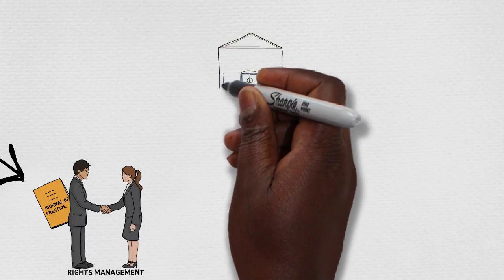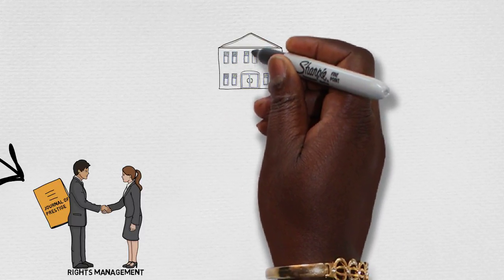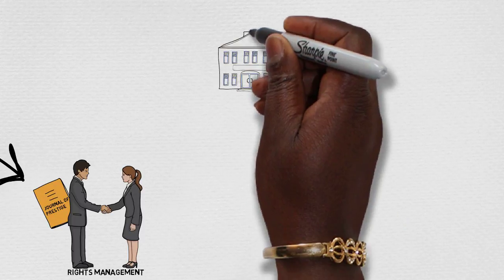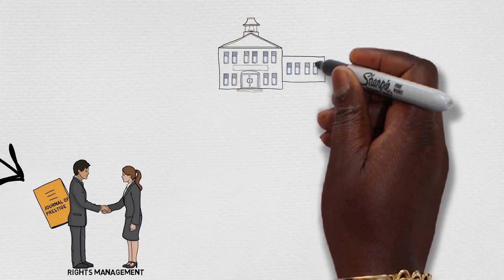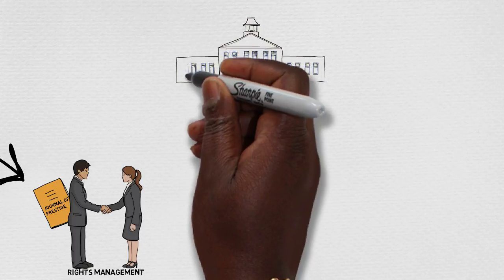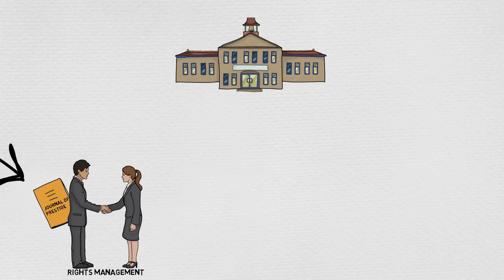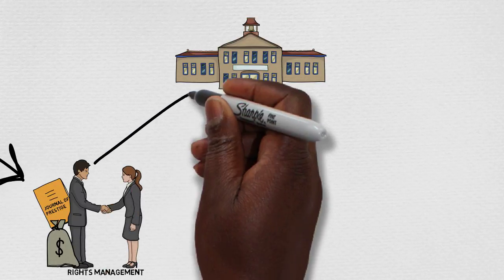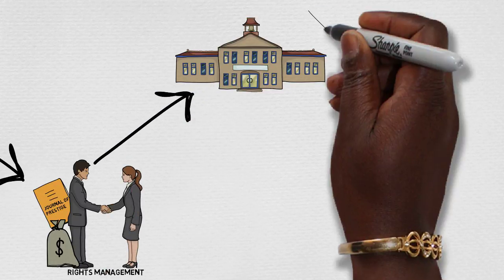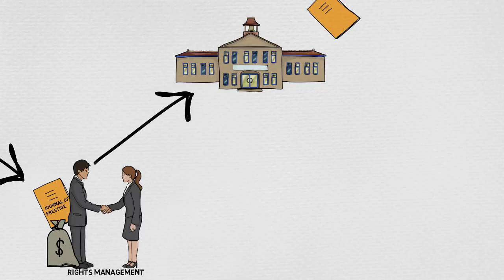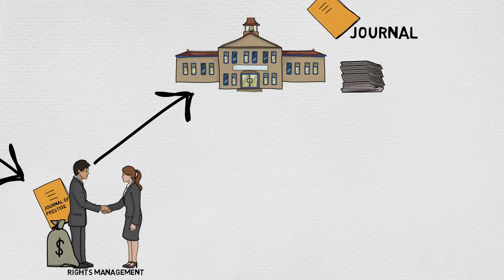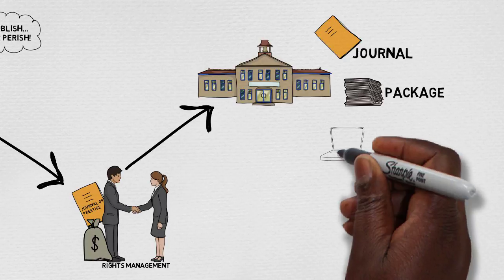When the publisher makes articles available for purchase, they are selling access to information, just like when a magazine sells you a subscription to what they publish. This is where the library comes in. Because libraries purchase access for more than one person — including students, faculty, and staff — they spend large amounts of money to get the content you need for academic research. The library will choose to either purchase a subscription to an individual journal, to a package of journals owned by the same publisher, or to a database that contains many different journal articles.